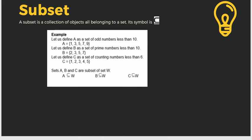For prime numbers, only those divisible by 1 and themselves are included, so 2, 3, 5, and 7 are under the set. Let us define C as a set of counting numbers less than 6, so C = {1, 2, 3, 4, 5}. Even though we gave a limit of less than 6, this is still considered a subset of W, the set of numbers less than 10. So we can denote that A, B, and C are subsets of W.